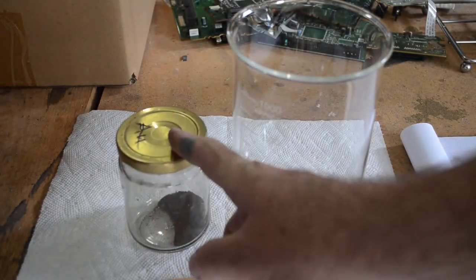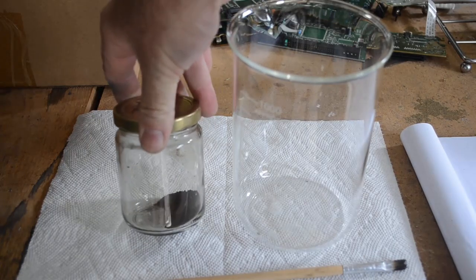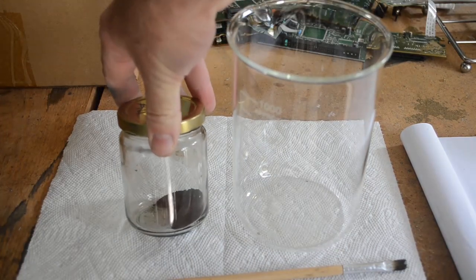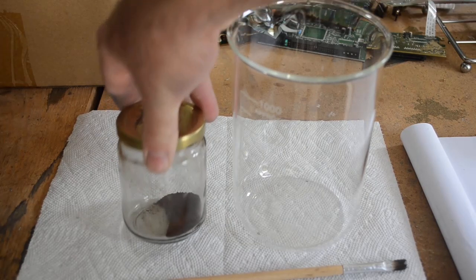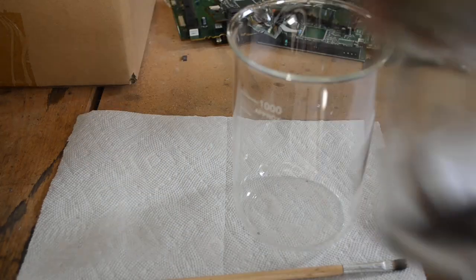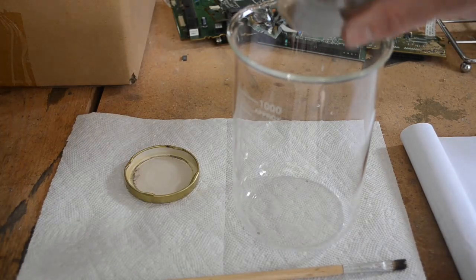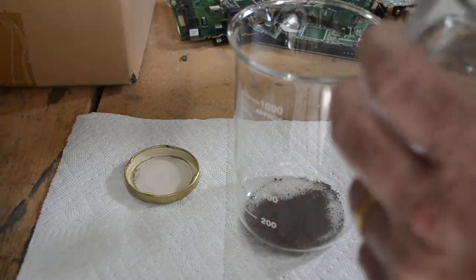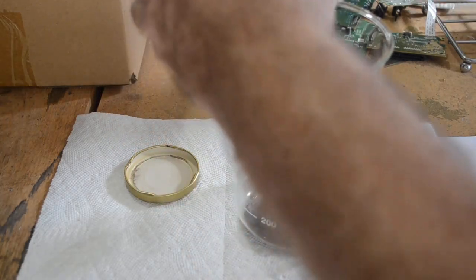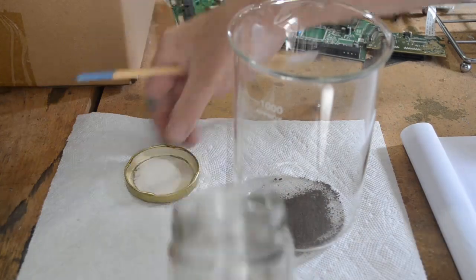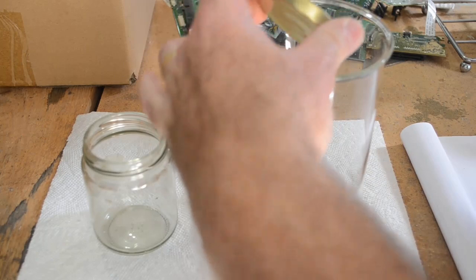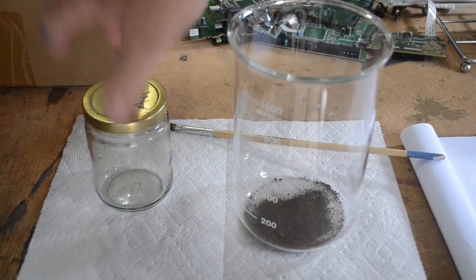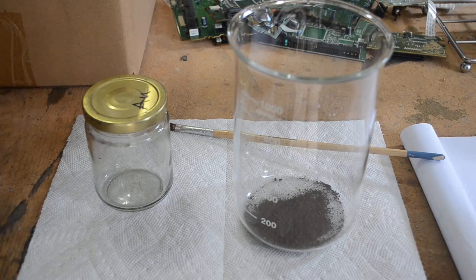I like to process my gold at least three times using different precipitating agents to get very clean gold, because different precipitating agents will bring down different things. Like SMB will bring down gold and platinum group metals, but other precipitating agents will only bring down the gold. So I like to refine it three times, make sure it's good and clean before I melt it down and get good 24 karat bars.